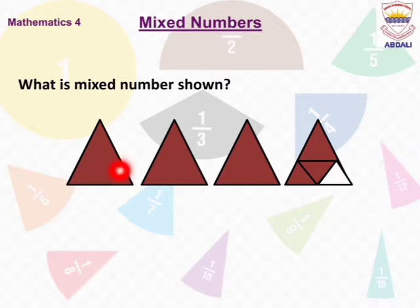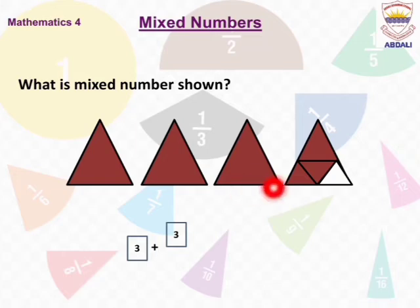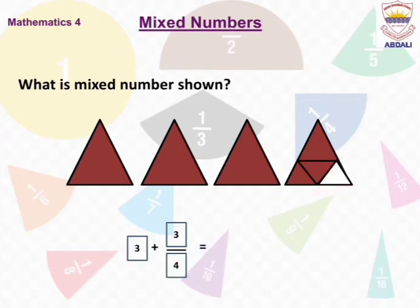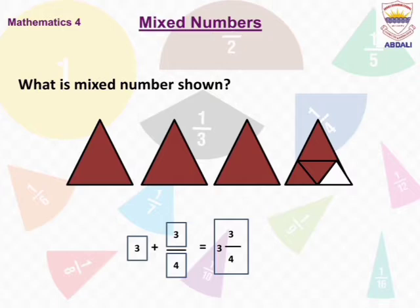Here, 4 triangles are given and 3 triangles are fully colored. In the last triangle, 3 portions are colored and 1 portion is uncolored. We write 3 in the whole number place, then write the addition sign. In the last triangle, 3 portions are colored so we write 3 in the numerator, and since the last triangle has 4 parts, we write 4 in the denominator. So 3 plus 3/4 — removing the addition sign — gives us the mixed number 3 and 3/4.